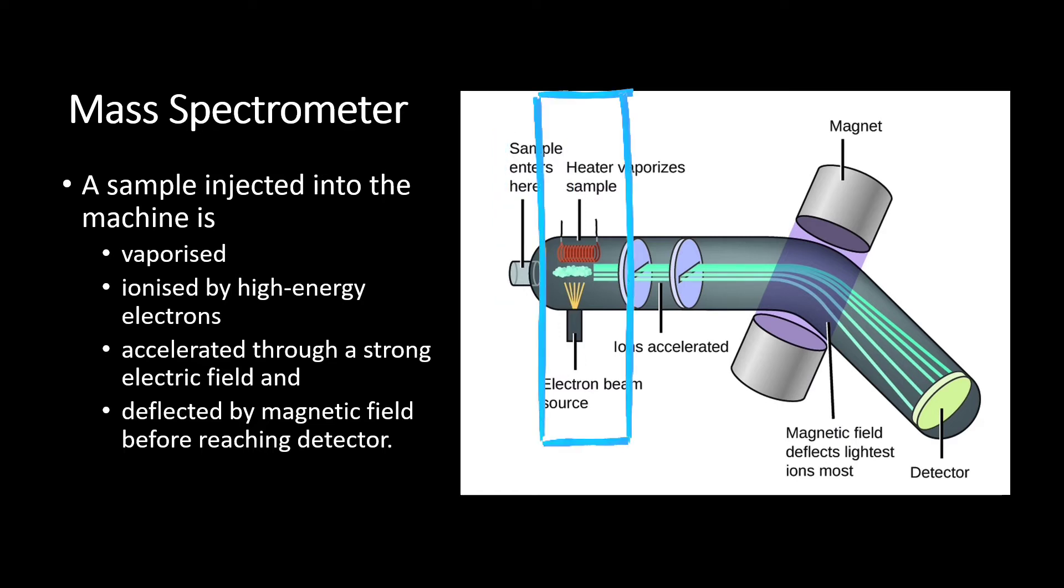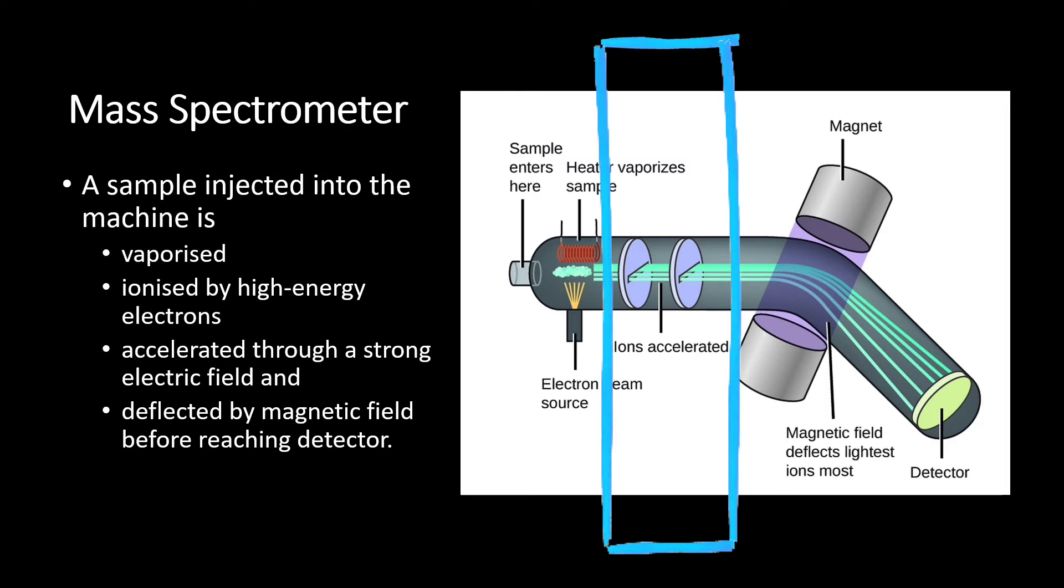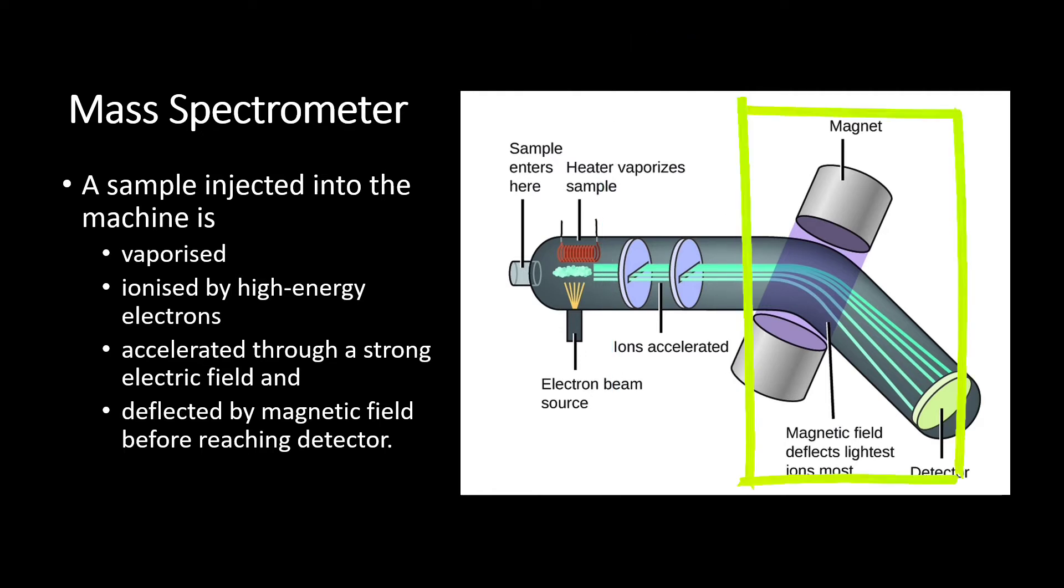The sample then will be bombarded with electron beam to ionize the sample. So the ions formed, then will be accelerated through a strong electric field and then deflected by the magnetic field before reaching the detector at the end. The detector usually will be connected to a computer to get the mass spectrum.